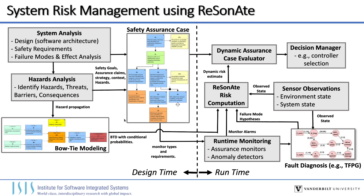Assurance cases are commonly used to explain how the system achieves safety and what measures have been taken. At runtime, the Resonate risk computations take in the bowtie diagrams along with those estimated conditional probabilities, along with other information about the system — such as sensor observations about the environment, hypotheses about particular failure modes from a suitable fault diagnosis engine, and any other runtime monitors which may give us an indicator of how the system is doing. This produces a dynamic risk estimate, which we can feed back into our assurance case to evaluate if our evidence is still valid and our goals are still satisfied, and then into a decision manager to make decisions about any necessary mitigation or contingency actions.